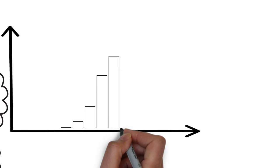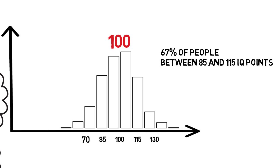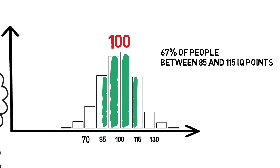IQ can be described with the so-called Gaussian distribution. These tests are calibrated so that the median performance is always 100. Based on this definition, more than two-thirds of people perform within one deviation between 85 and 115 points. These people have average performance.